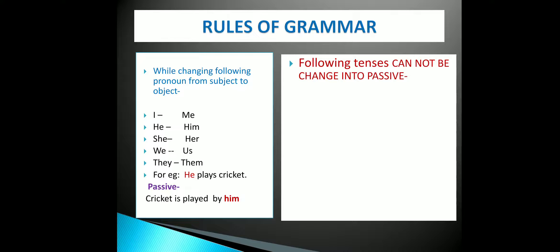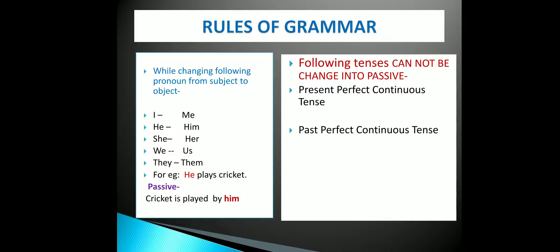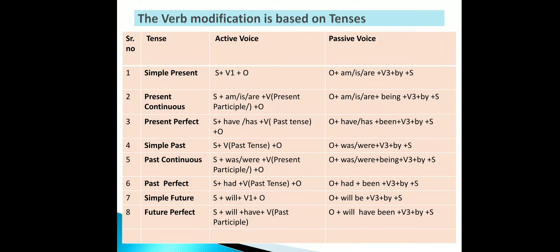Note that the following tenses cannot be changed into passive voice: present perfect continuous tense, past perfect continuous tense, future continuous tense, and future perfect continuous tense. The verb in a sentence is modified on the basis of its tense. A table is provided showing each tense with its active voice structure and how it changes into passive voice — study this table carefully.